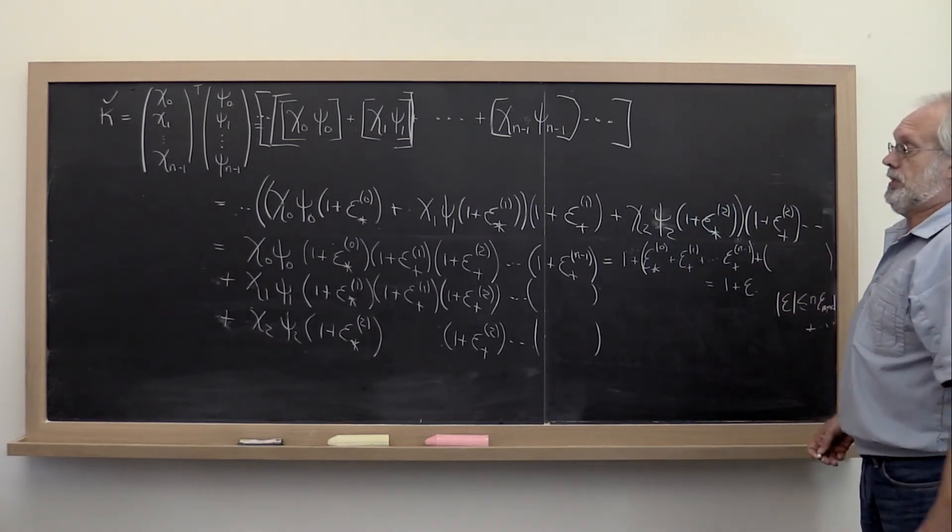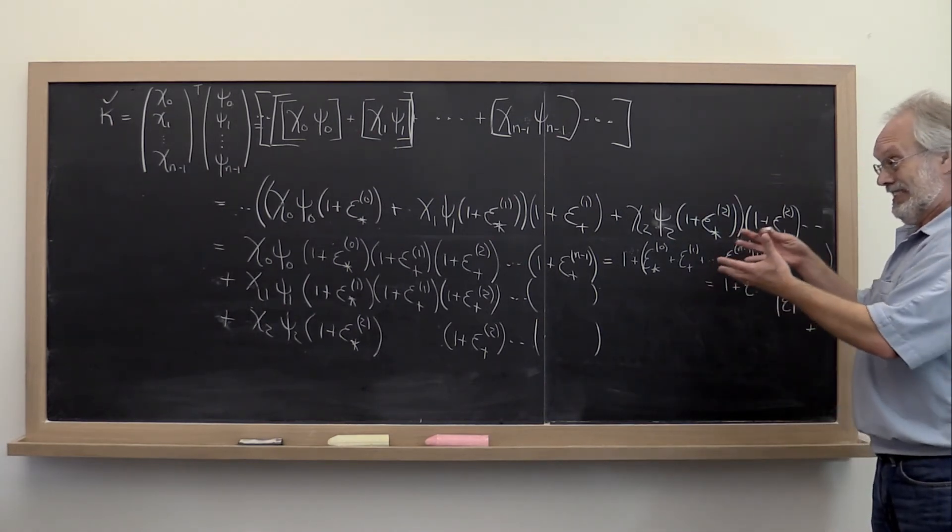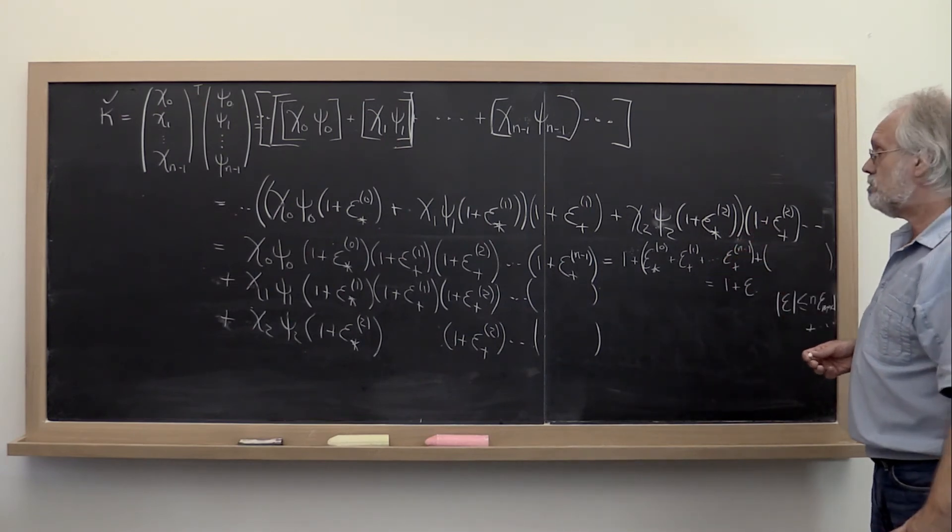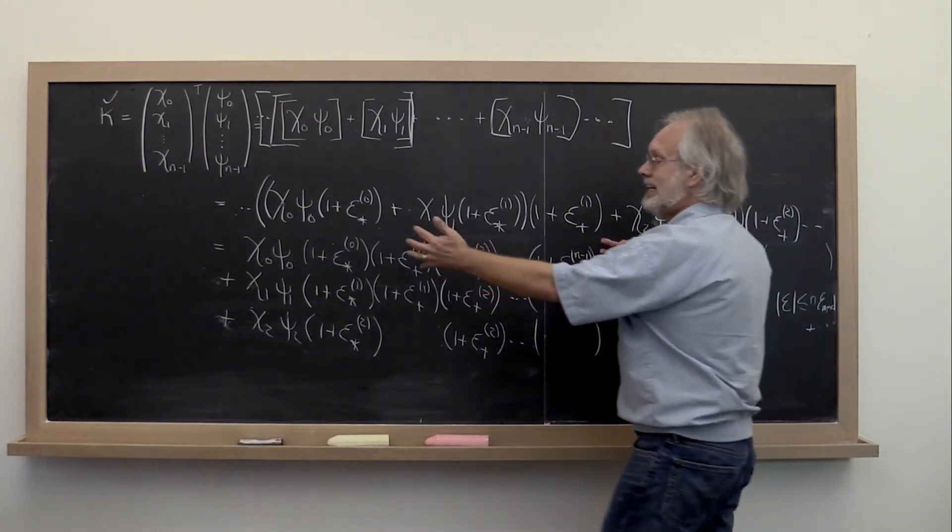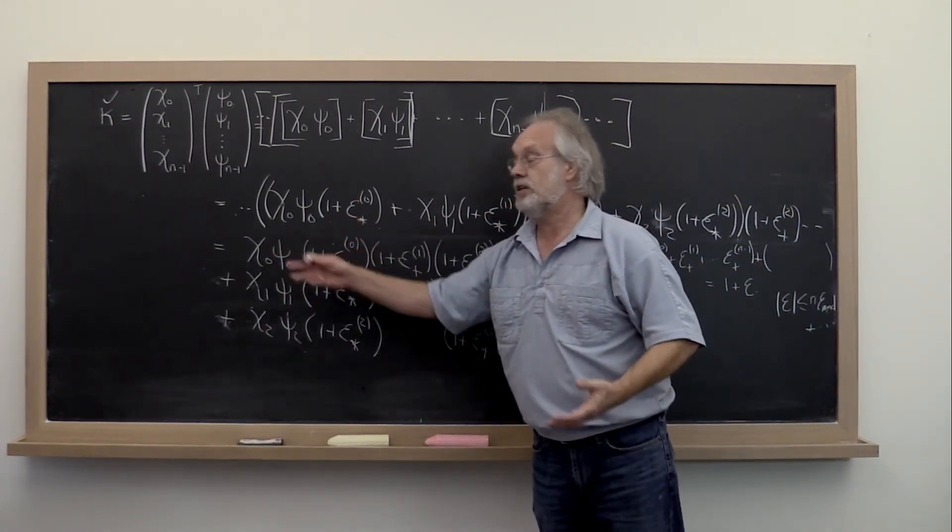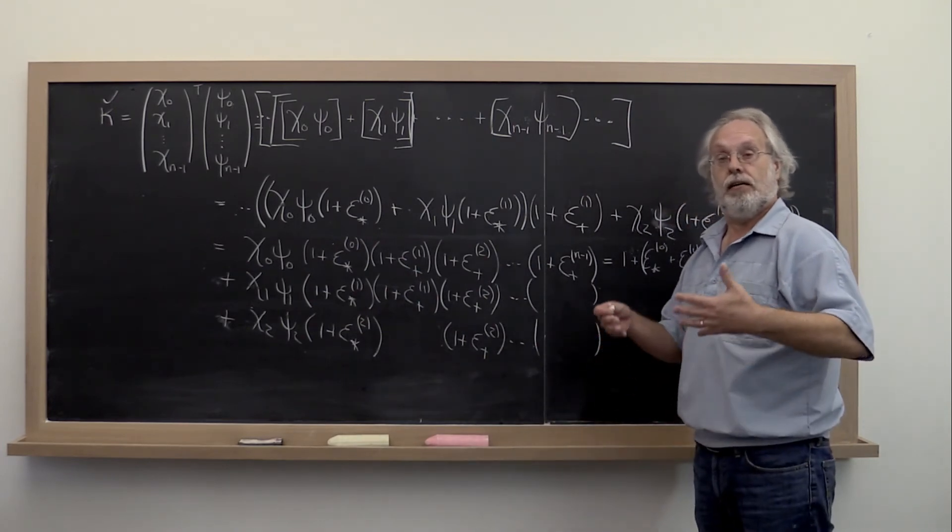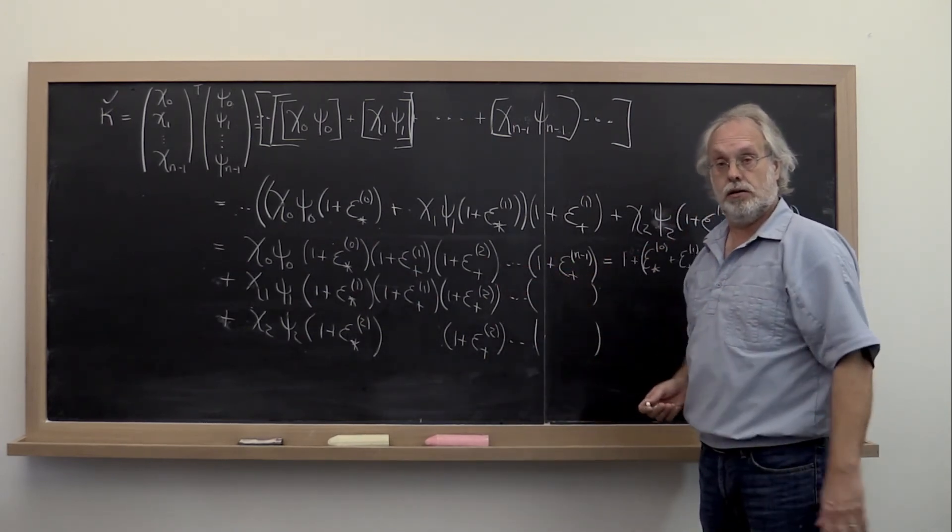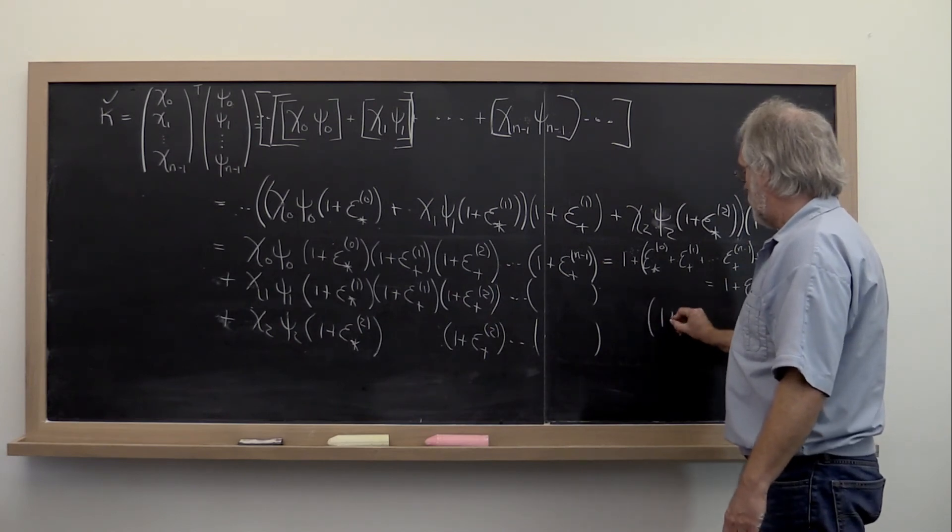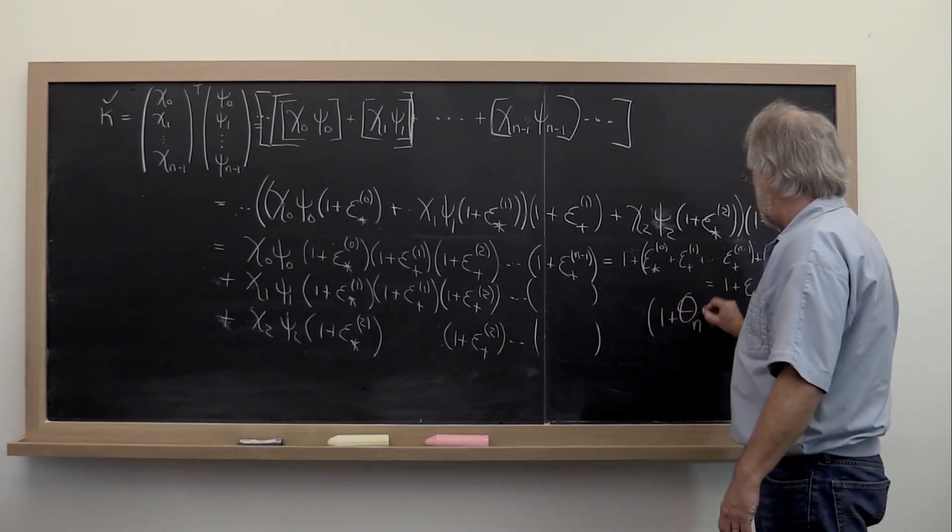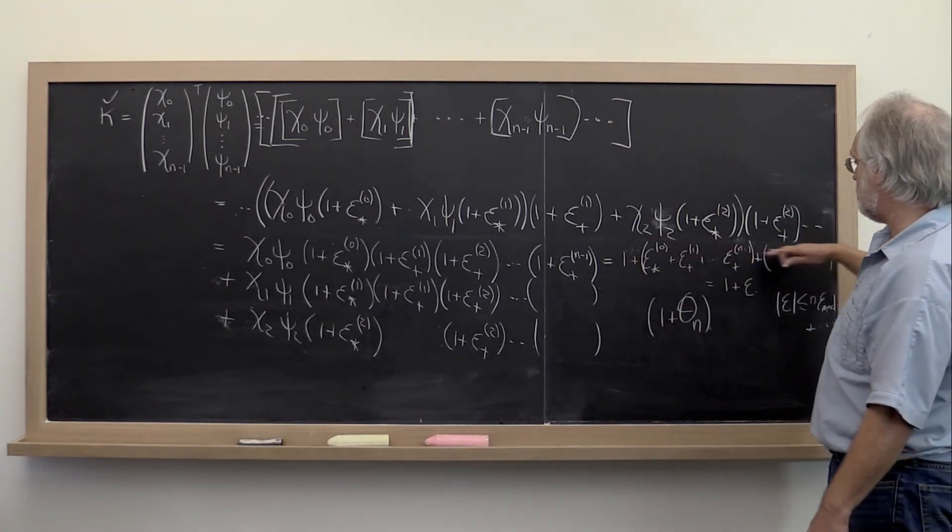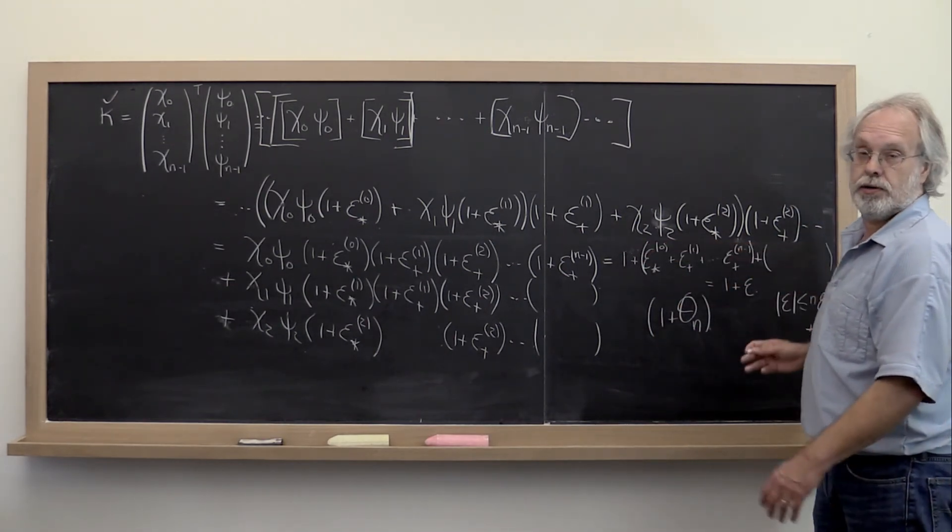Still, this is really cumbersome, right? Wouldn't it be nice if we have a nice clean notation for capturing that this term has been hit by n errors? For that we introduce the notation 1 plus theta sub n, where that 1 plus theta sub n is supposed to capture all of this right here.